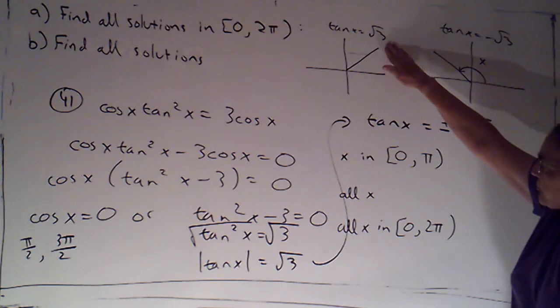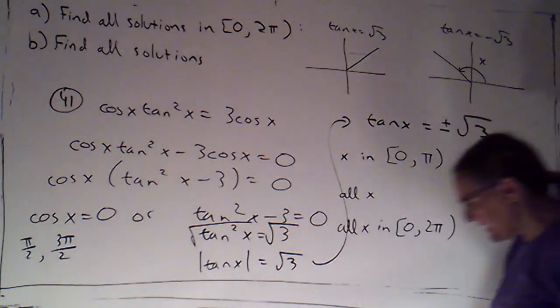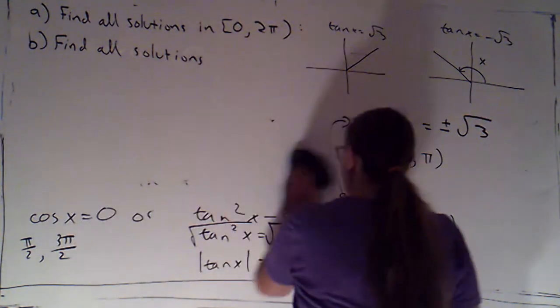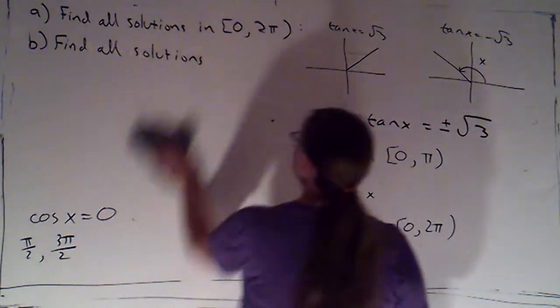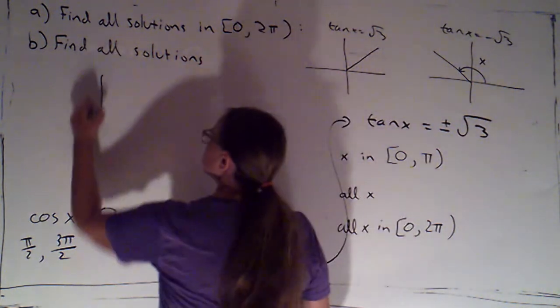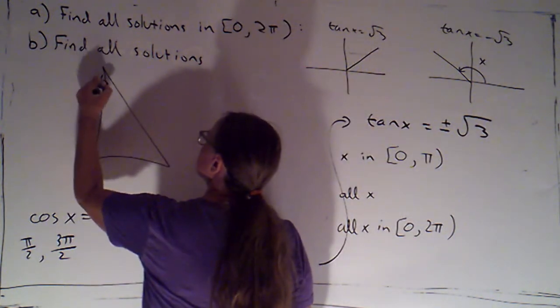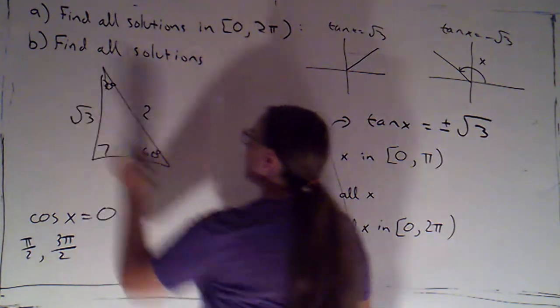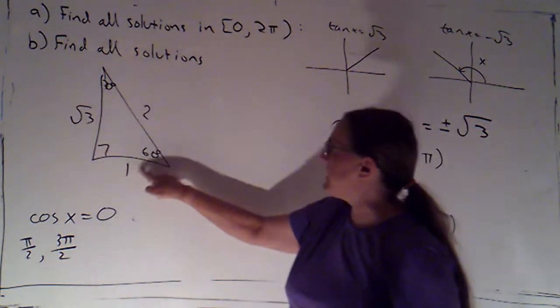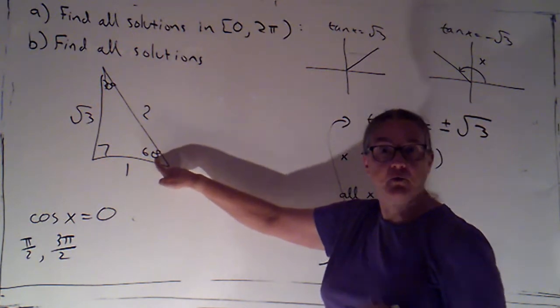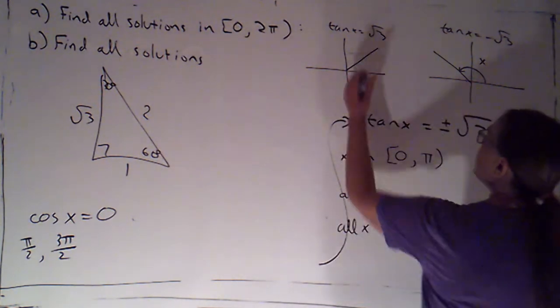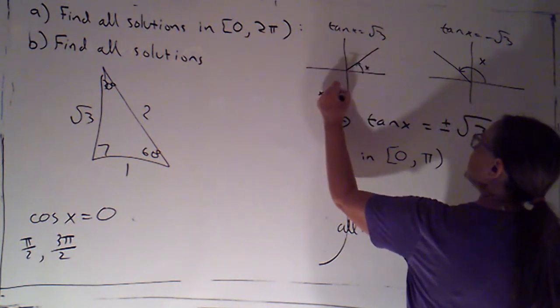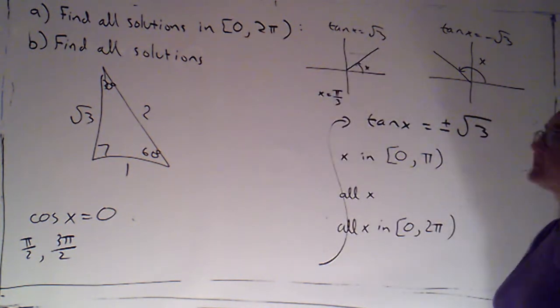Now, I see that root 3, and that looks like a familiar thing. So, I'm going to draw my 30, 60, 90. Looks like I'm going to get a tangent of root 3 at 60 degrees, which would be pi over 3. So, here, I can say there's my x, x would be pi over 3.